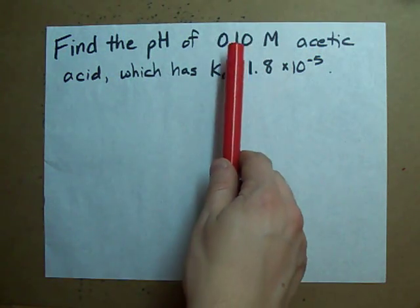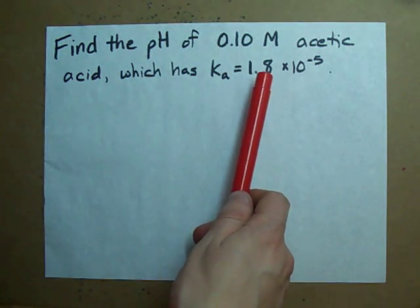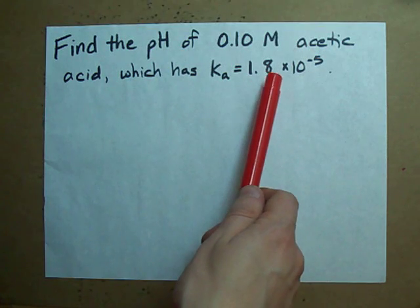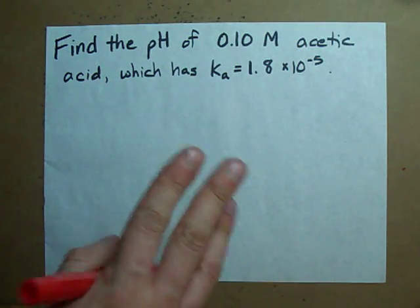What if you have 0.1 moles per liter of acetic acid, which has this particular Ka, 1.8 times 10 to the negative 5. How are you going to find the pH?